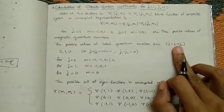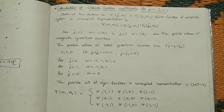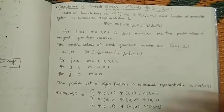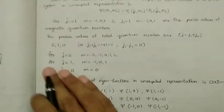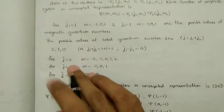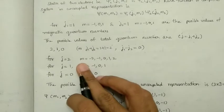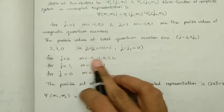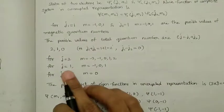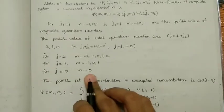The maximum value is j1+j2 and the minimum value is j1-j2, with interval 1 between them, giving three possible j values. For j=2, the m values are -2, -1, 0, 1, 2 (five values). For j=1, the m values are -1, 0, 1. For j=0, m equals 0 only.